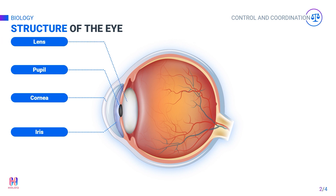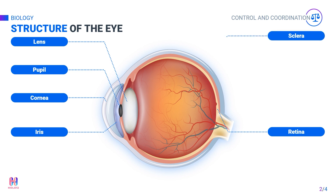The lens is a transparent disc that focuses light on the retina so that an image is formed. This is possible because the lens can change its shape.